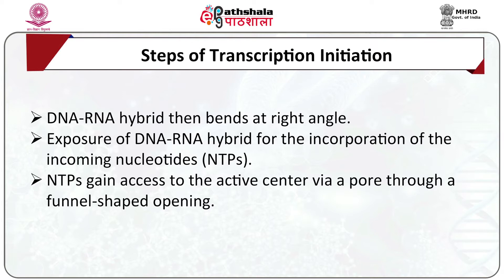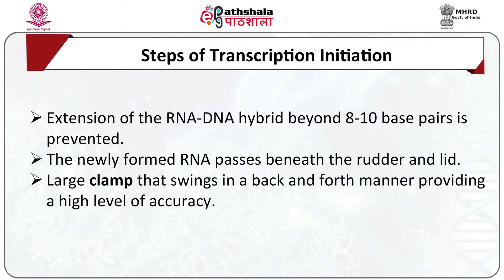With the axis entering the DNA, this results in the exposure of the DNA-RNA hybrid for incorporation of incoming nucleotide triphosphates or NTPs. These NTPs gain access to the active center via a pore, coming inside through a funnel-shaped opening. The 5 prime end of the DNA has an abrupt loop known as the rudder, which prevents extension of the RNA-DNA hybrid beyond 8 to 10 base pairs. The newly formed RNA passes beneath the rudder and the lid, another loop of protein. The lid and the rudder are managed by a large clamp that swings over the active center region in a back-and-forth manner, restraining the nucleic acid and providing a high level of accuracy.